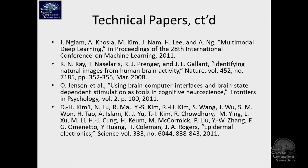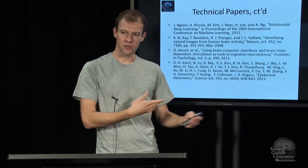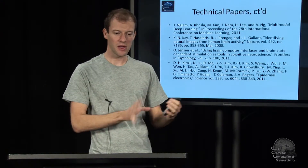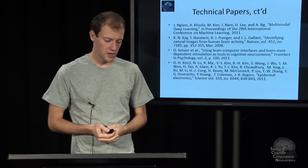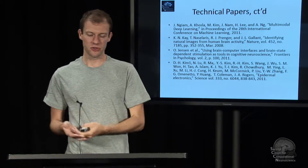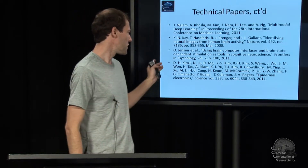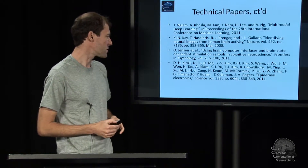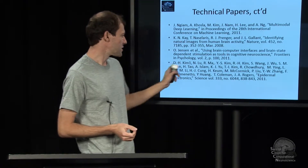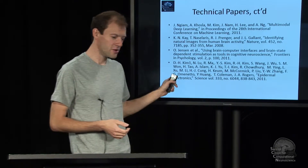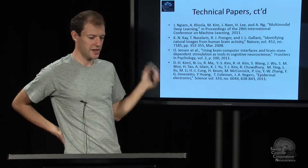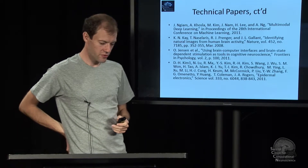There is a new direction in neuroscience involving brain-state-dependent manipulations and neuroscience experiments — dynamic experiments that depend on an estimate of the cognitive state of a person, which requires BCI technology somewhere in the loop. There is a paper on one of the first examples of this. There is also an interesting paper on a new direction in sensors: epidermal electronics, which was covered in the first lecture.